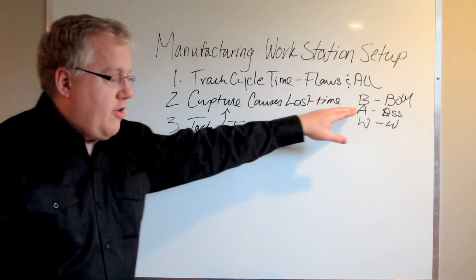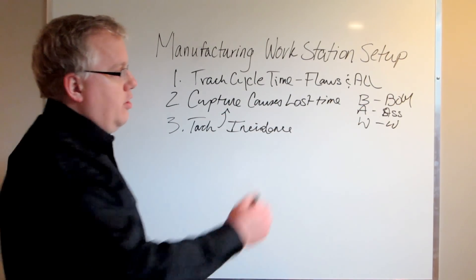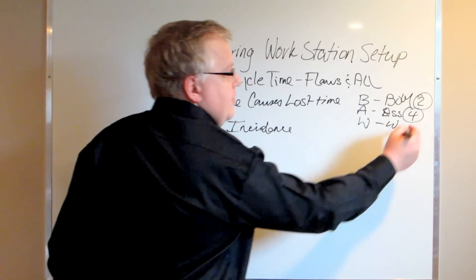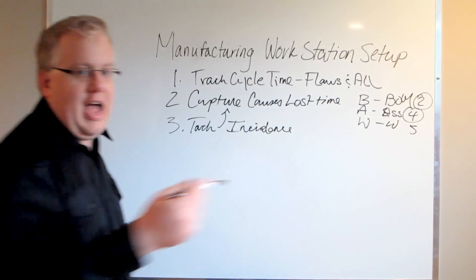As you're doing this tracking, you're going to track the incidents. You might want to put something like two beside that, four beside this, and five beside that, indicating how often it happens.